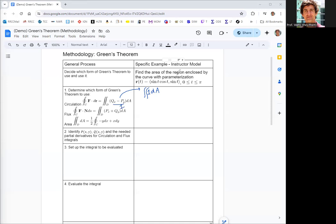You just have to come up with a placeholder vector field with first component p, second component q, such that qx minus py equals one. There's more than one way to do that.